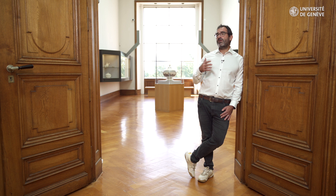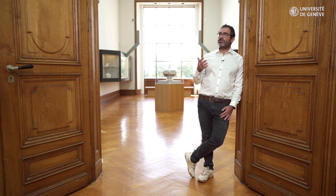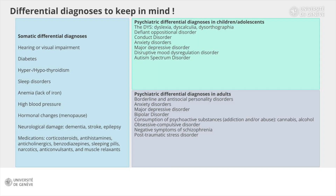Conduct disorders — lies, manipulation, breaking social rules and norms, lack of empathy — is another disorder that should be excluded. In children, we will also think of disruptive mood dysregulation disorder, which is characterized by frequent verbal and physical aggression and a very irritable mood.